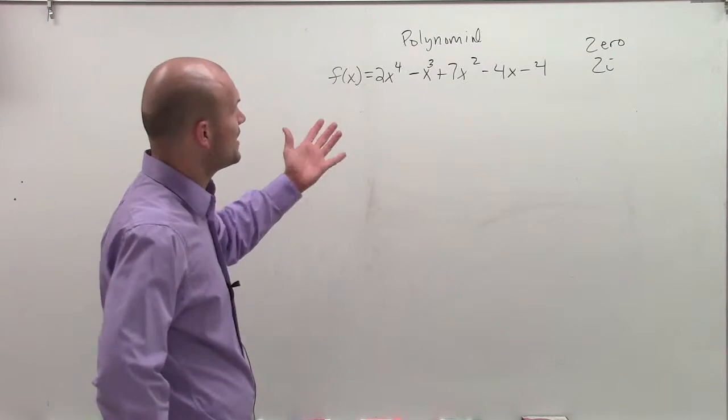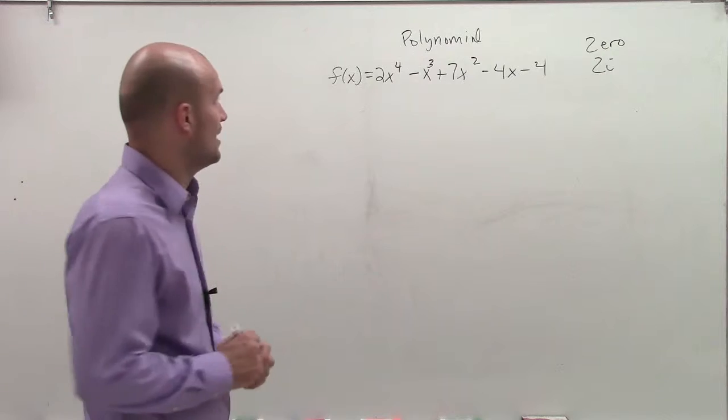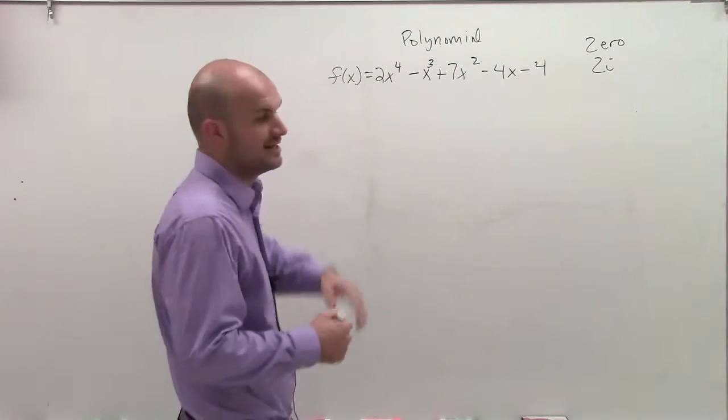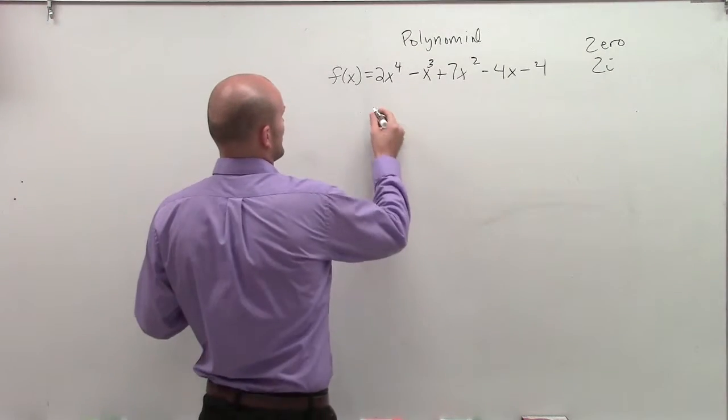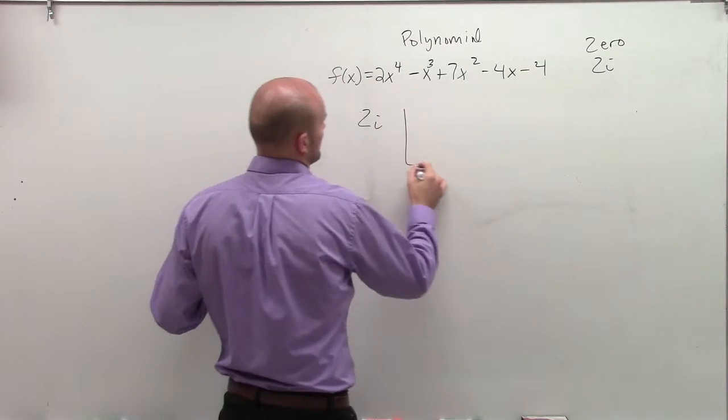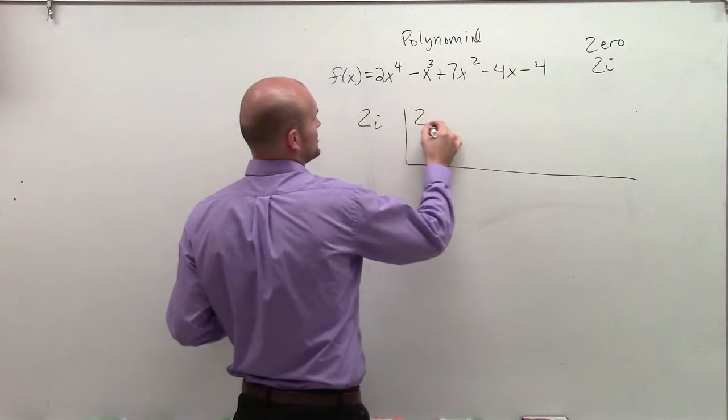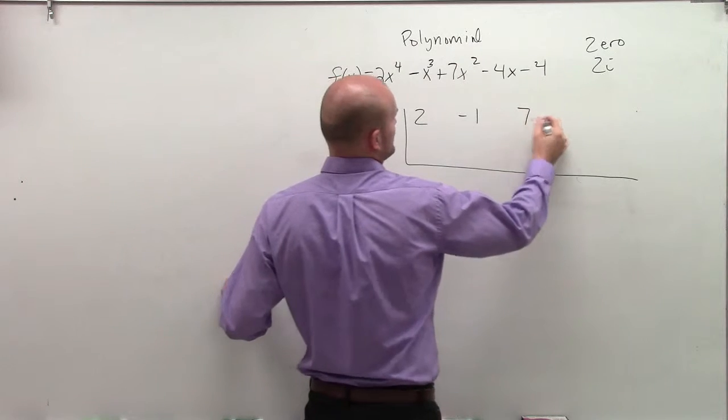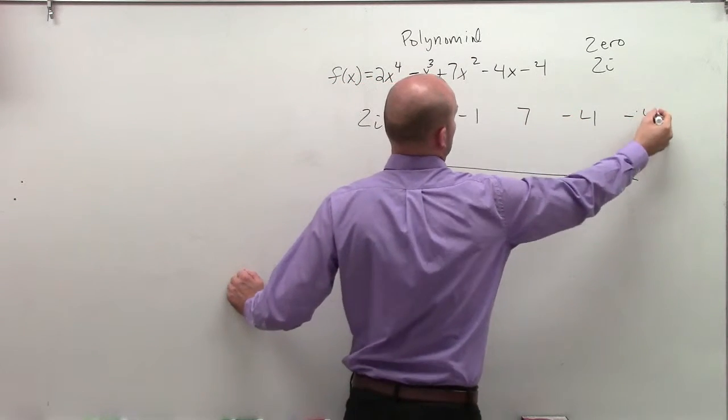So how does that work? Well, what we look at, we have a polynomial and then we have a zero, 2i. So what I need to do is use synthetic division. So I have 2i. I'm going to create a little space because it might get a little long. 2, negative 1, 7, negative 4, negative 4.